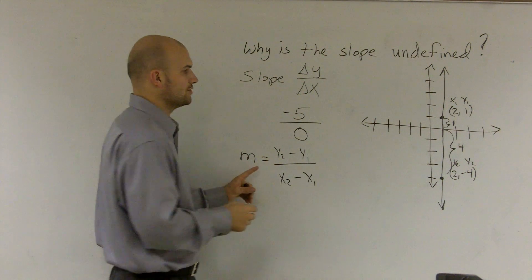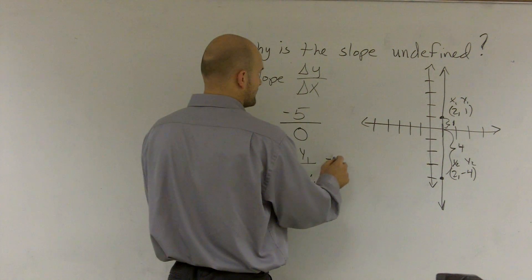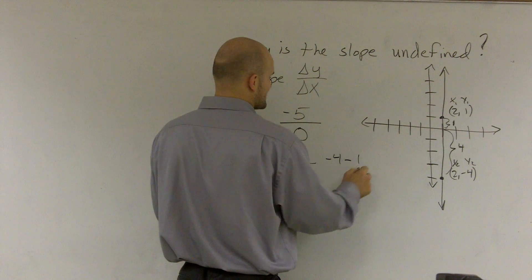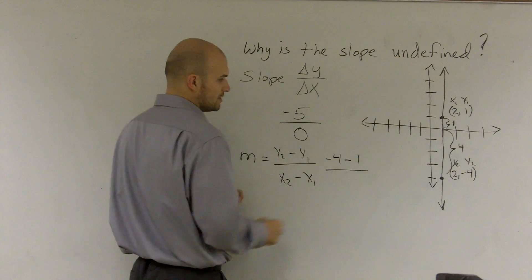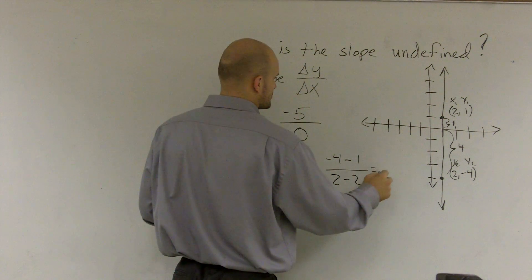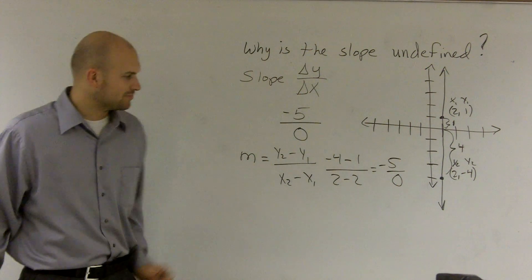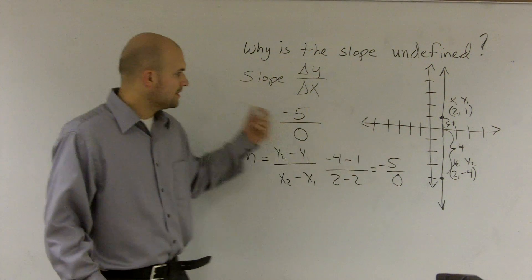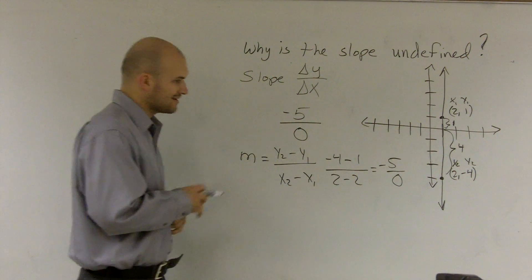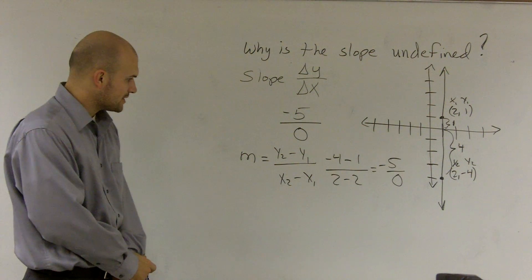So therefore, y2 is negative 4 minus positive 1 over 2 minus 2, which gives me negative 5 over 0. Something I already showed you, but you guys should know how to use this formula and to visualize it. So here's where we come into a problem, all right?